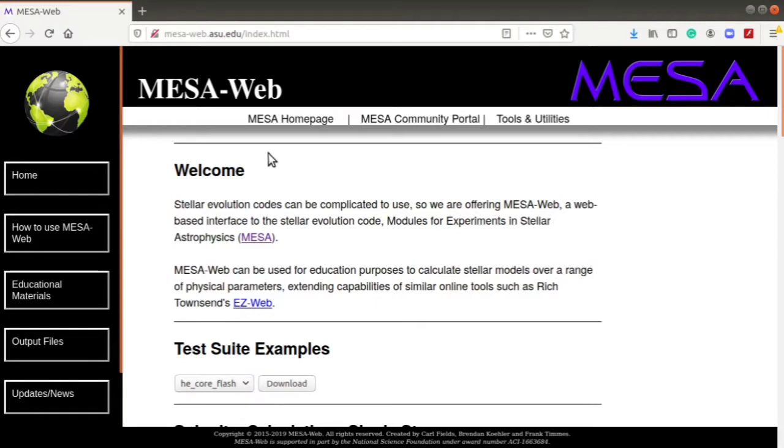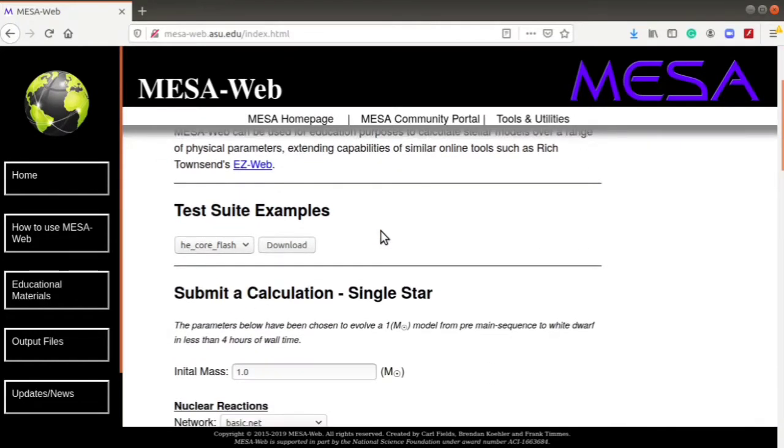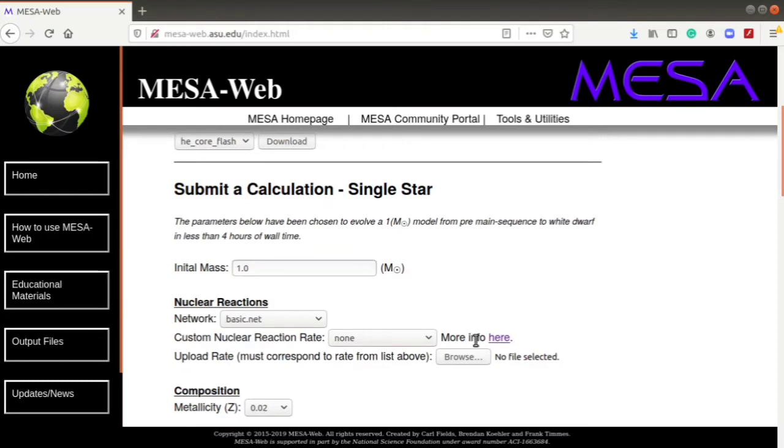So I'm using MESA Web, modules for experiments in stellar astrophysics. On the home page there are different parameters that I can see and set. For the meaning of parameters I have referred to this tab, so I know what different parameters mean.